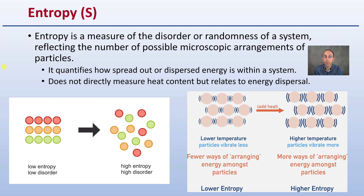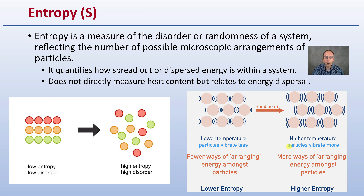Entropy quantifies how spread out or dispersed energy is within a system. It does not directly measure heat content, but relates to energy dispersal. When things are very organized and orderly, as seen on the left of the images shown, that is a very low entropy and low disorder. When we add heat or temperature, the disorder increases and we are also increasing entropy.